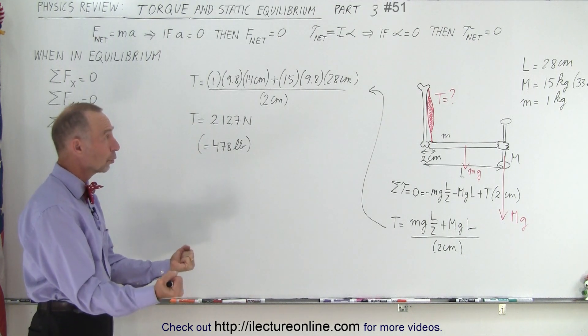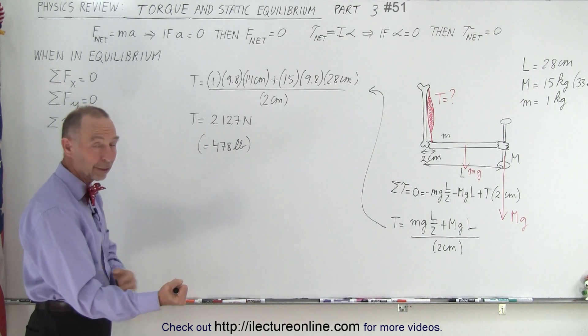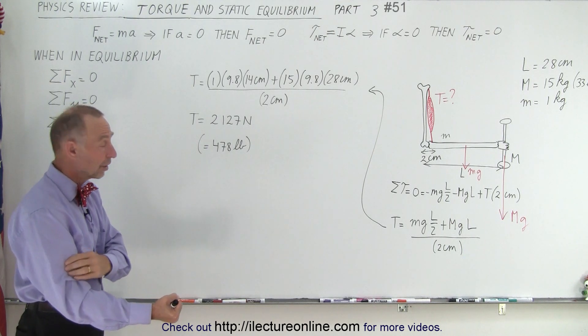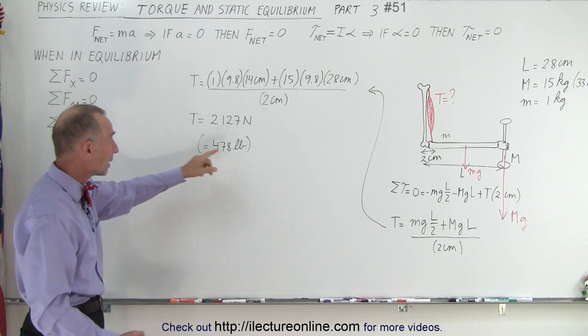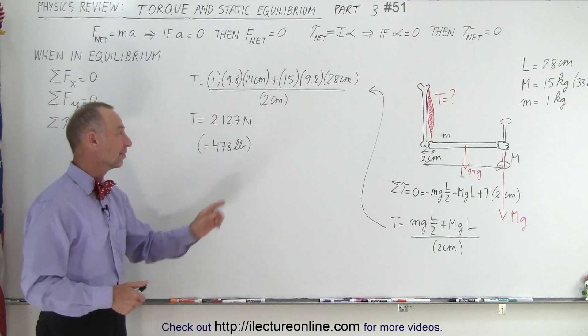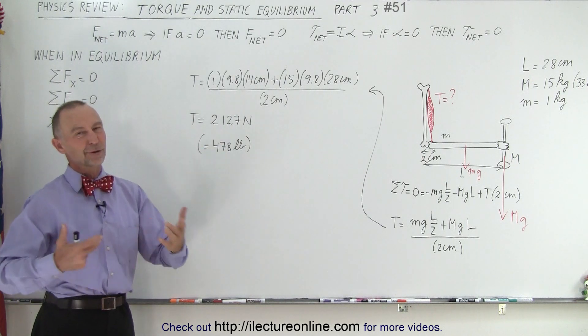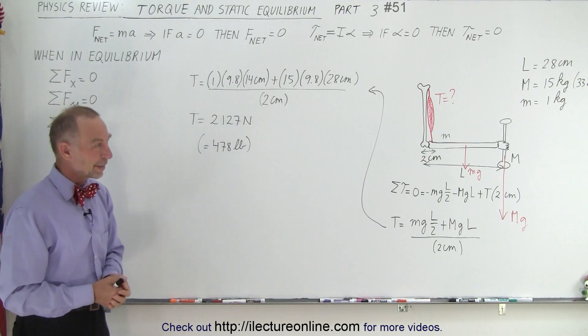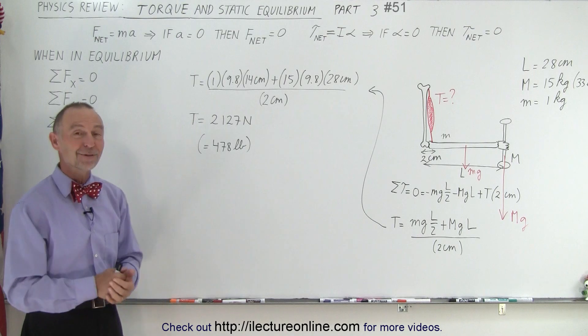Notice when we convert to pounds, that's quite a bit — that's 478 pounds. So holding a 33-pound barbell requires the tension in your bicep to be equal to 478 pounds. If you're not quite familiar with the units of Newtons, that is how it's done.